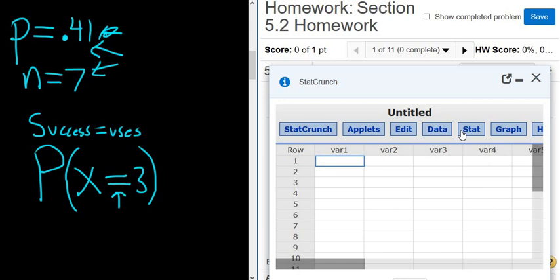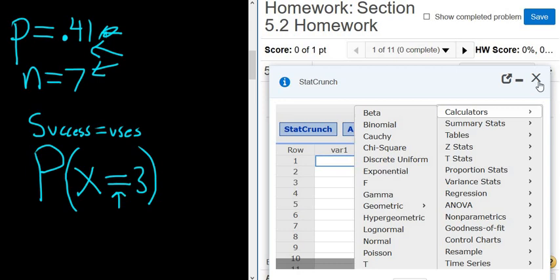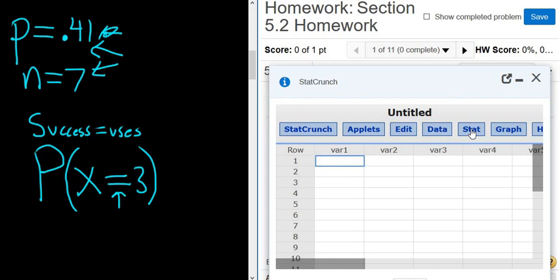Again, I'll do it again. So click on question help, go to where it says StatCrunch. Then you go to Stat, Calculators, and then you go to Binomial. It's the second one.